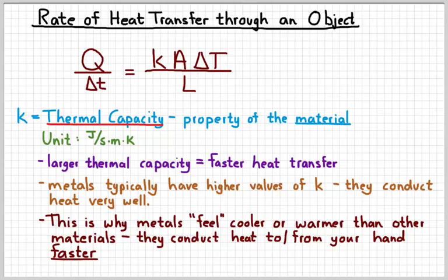So for instance, if you touch something in a cold room that's made out of metal, it'll typically feel colder, but it's not really colder than the other things. It just conducts heat away from your hand faster.